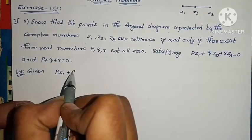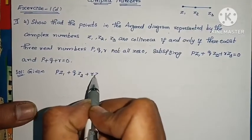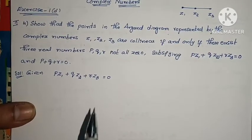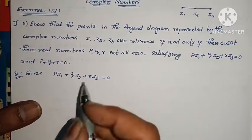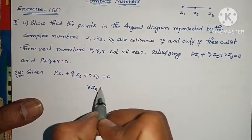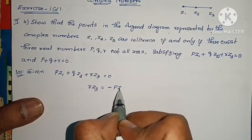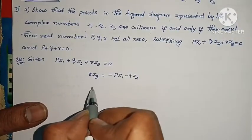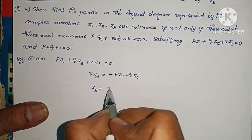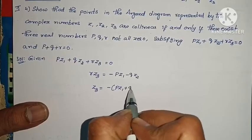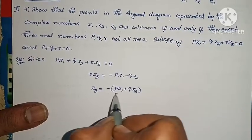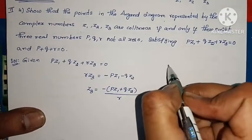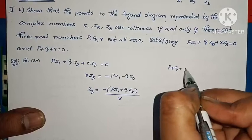Given condition: PZ1 + QZ2 + RZ3 = 0. From the same condition, through R, we apply the same rule. The fact that P + Q + R = 0 gives us P + Q + R = 0.